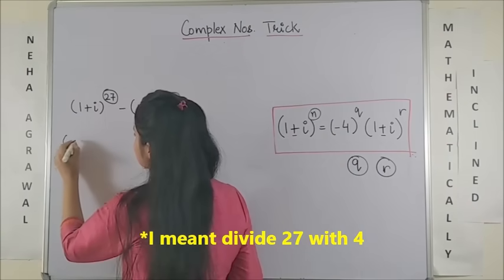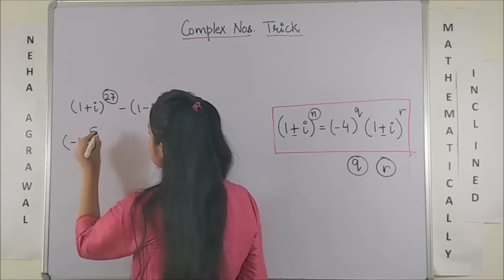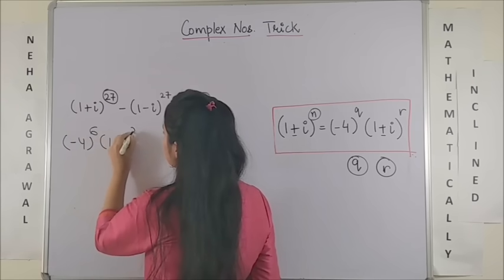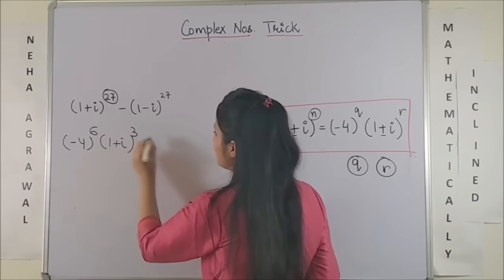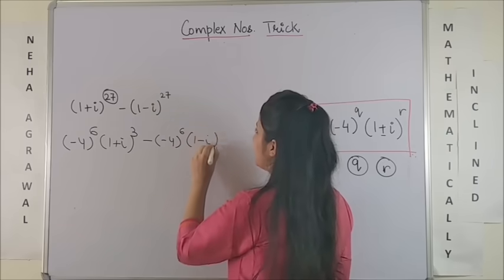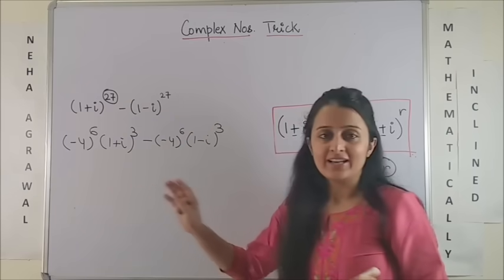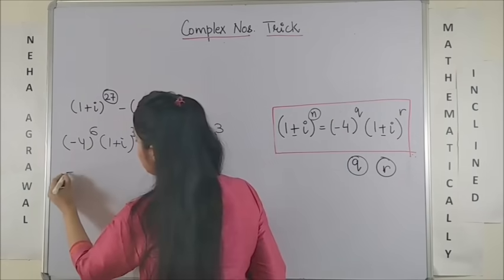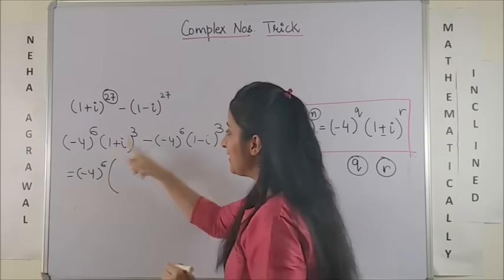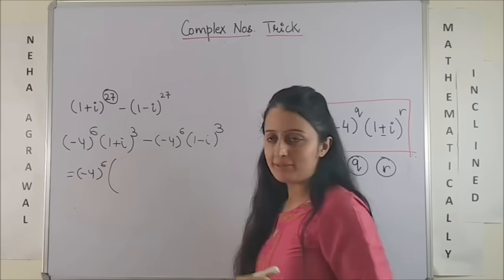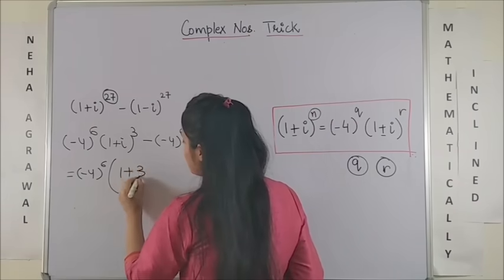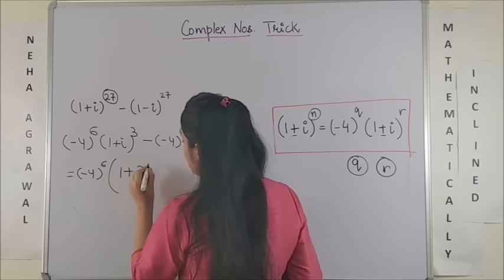So I can say this is minus 4 raised to power 6, 1 plus iota raised to power cube, minus minus 4 raised to power 6, 1 minus iota raised to power 3. Now you just need to simplify this. So this is minus 4 raised to power 6, I can take it common. Here you know you can open the brackets which will give you 1 plus 3 iota plus 3 iota square.